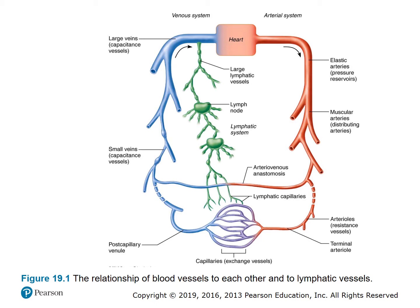At the level of the capillaries — called exchange vessels — exchange of nutrients, oxygen, and CO₂ happens. Large veins are called capacitance vessels. Arteries come in two types: elastic arteries and muscular arteries. We're going to talk about these different types.